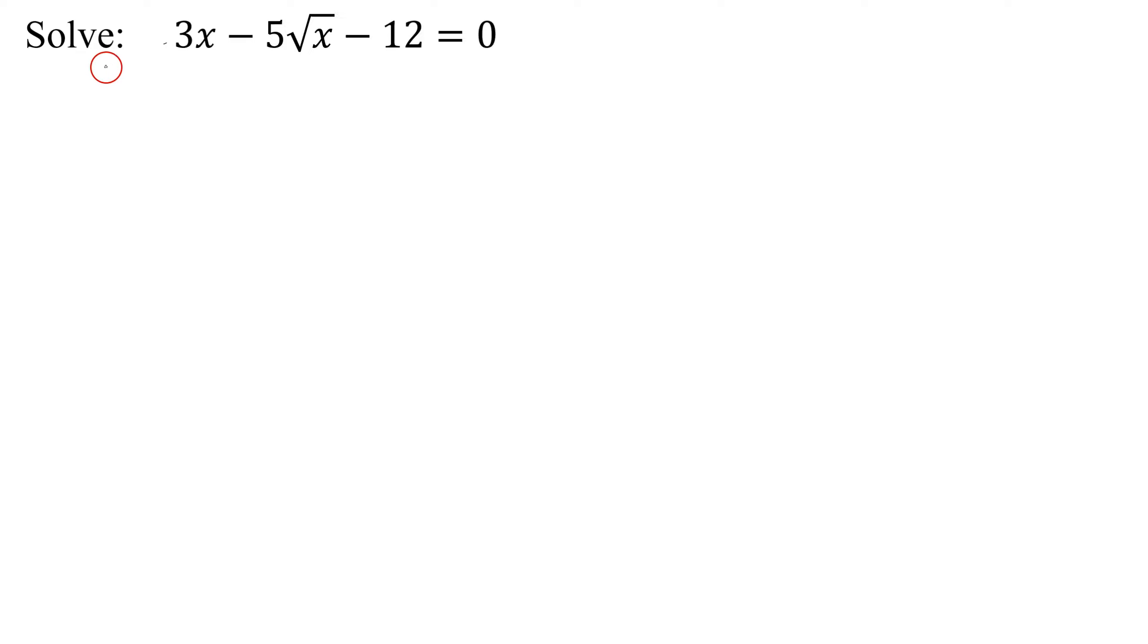In this example, we need to solve the equation 3x minus 5 times the square root of x minus 12 equals 0. What type of equation do we have here? Notice it has a square root in it, so it's a radical equation.